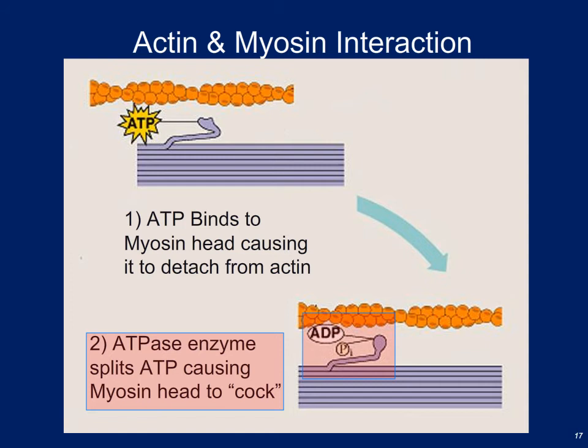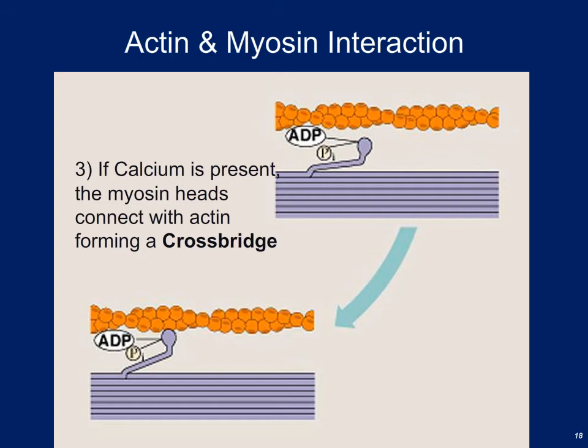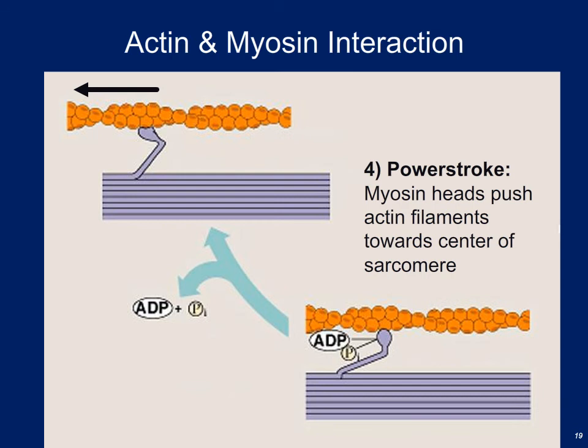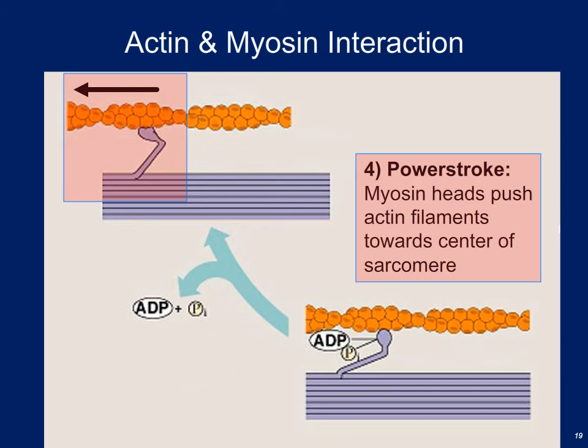Once the myosin head has been cocked back using energy from ATP, it will form a cross bridge — assuming calcium is present to move the troponin and tropomyosin molecules out of the way of the myosin binding sites on actin. If calcium is present, the binding sites are exposed and the myosin head joins with the actin receptacle, forming a cross bridge. Once the cross bridge is formed, the myosin head releases ADP and free phosphate, then performs the power stroke — pulling the actin molecule closer toward itself to pull the sides of the sarcomere closer.